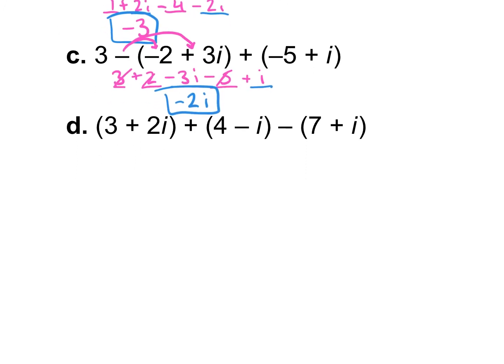For example D, distribute first, then rewrite as 3 plus 2i plus 4 minus i minus 7 minus i. Combine real numbers: 3 plus 4 minus 7 equals 0. Combine imaginary numbers: 2i minus i minus i equals 0. So the answer is just 0.